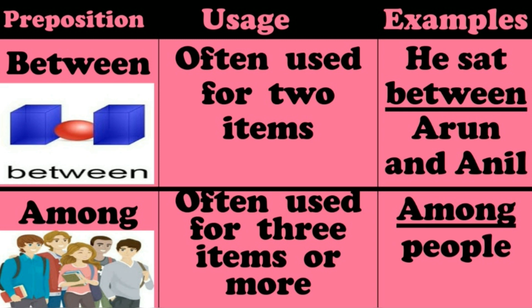For example, he disappeared among the people. Let's see the picture — one girl, four boys. It means more than two. So the word to use is 'among'.